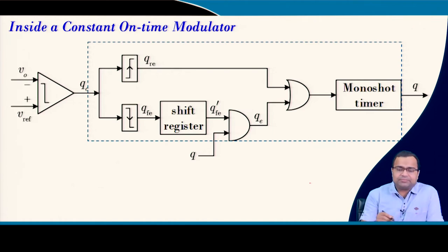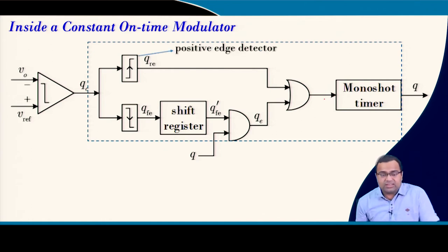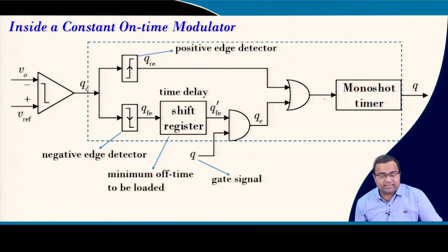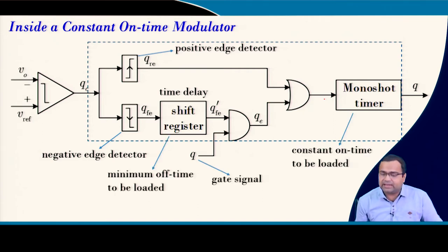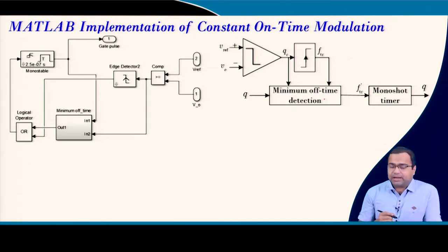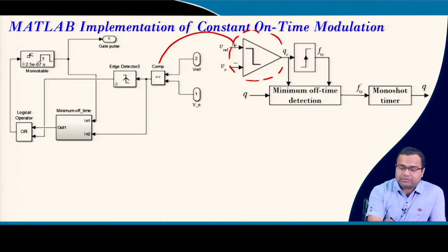To solve the turn-on problem in constant on-time, we identify the falling edge of the gate signal, delay it, then AND it with the comparator output. The AND output is ORed with the original rising edge trigger. The resultant output of the OR gate is the trigger pulse used for the monoshot timer. Inside the monoshot timer there is a shift register. We need positive edge detection, negative edge detection, a time delay, a gate signal, a minimum off-time setting, and the constant on-time value.